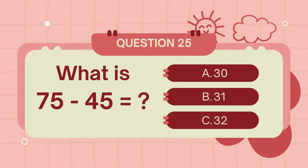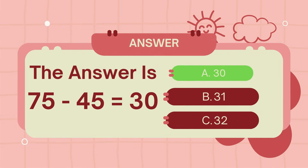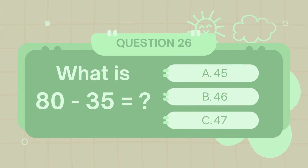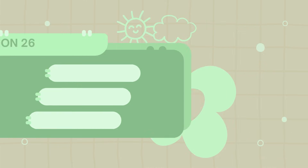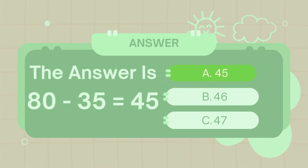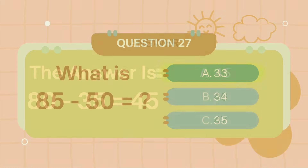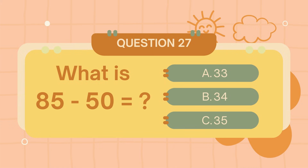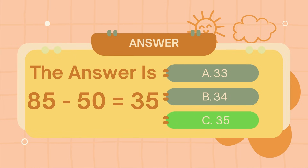What is 70 minus 30? The answer is 40. What is 85 minus 50? The answer is 35.